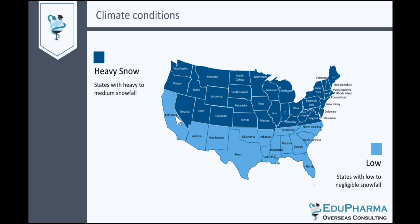The states on the southern side — California, Arizona, Texas, South Carolina, North Carolina, and Florida — are some of the states where the amount of snowfall is much less or almost negligible, as compared to some of the states which are closer to the Canadian border, which includes states like Washington, Minnesota, New York, and New Jersey. These places are known for their freezing cold temperatures.